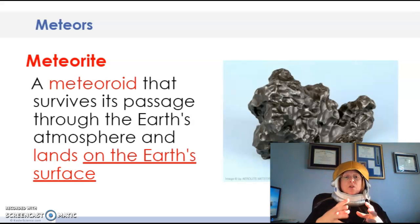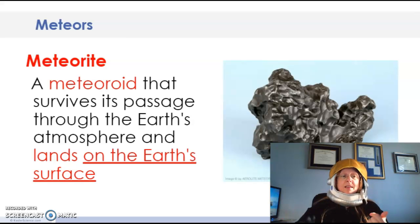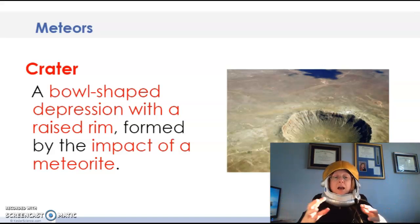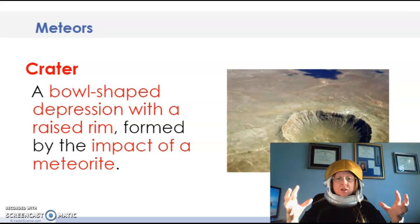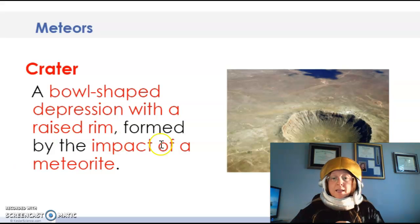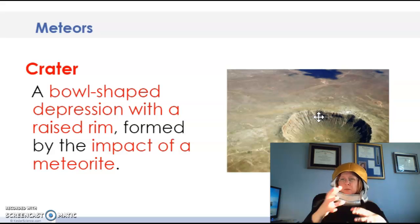Now, sometimes a meteorite can make an impact when it lands on the earth. And when it lands on the earth, no matter how big it is, it is called a crater. If it's a pretty big meteorite, it can make a really big bowl-shaped depression. Got like a raised rim, like this side right here. Could be smaller, could be different sizes. But those are called crater or meteorite craters. So just keep that in mind.